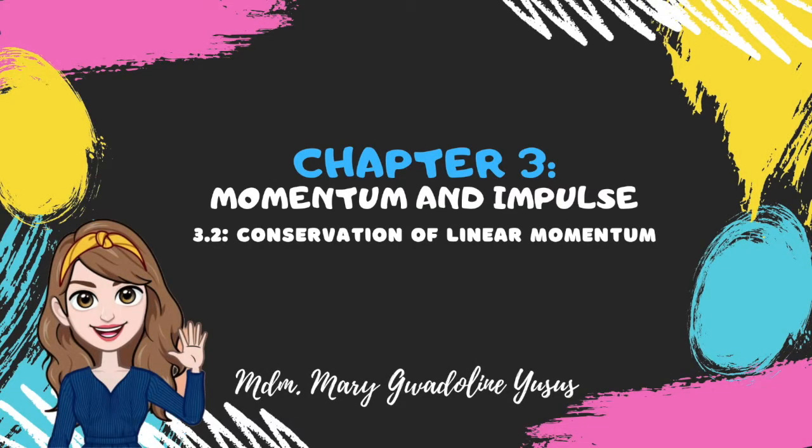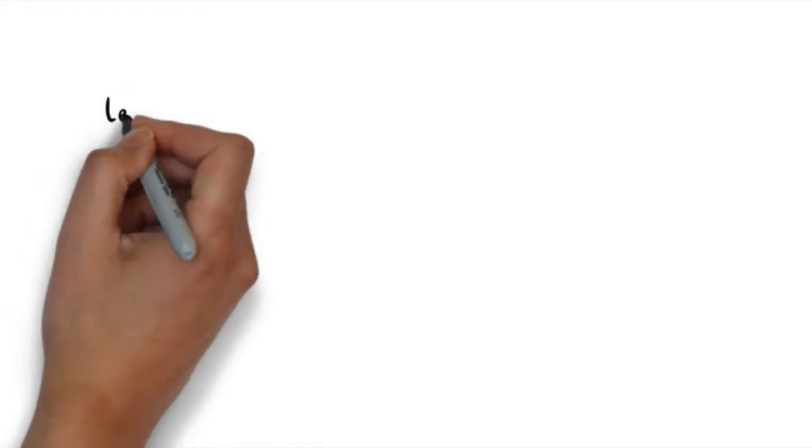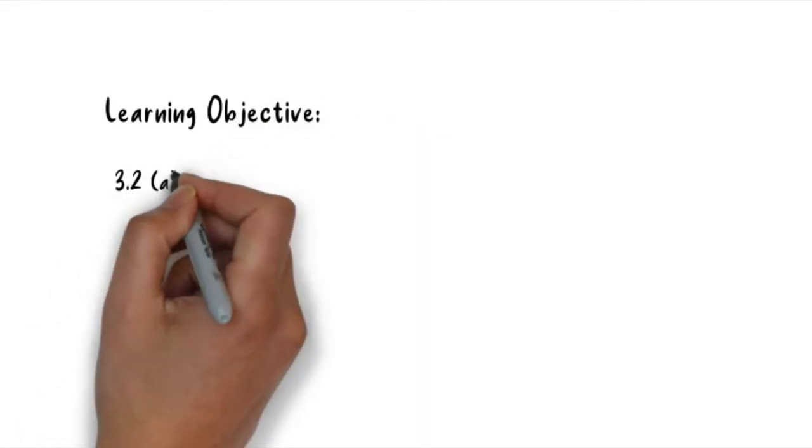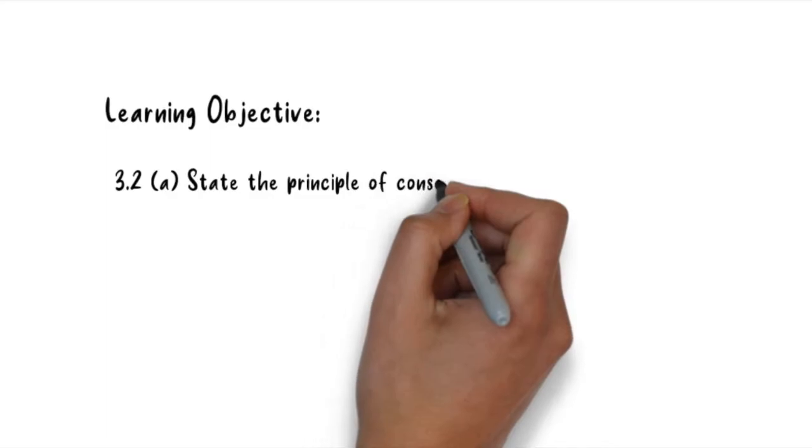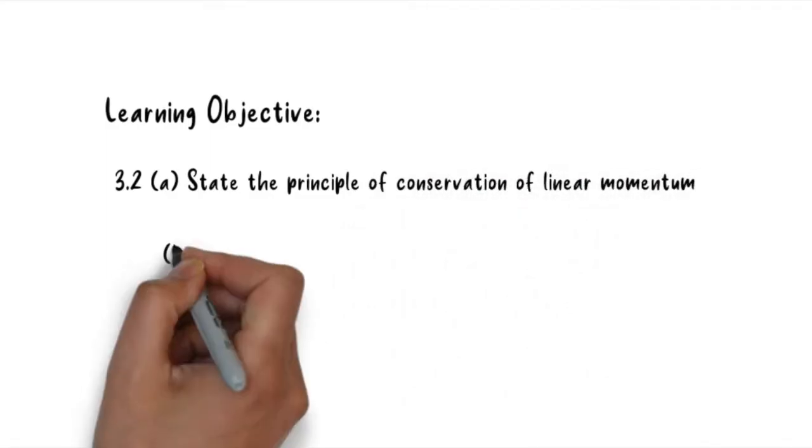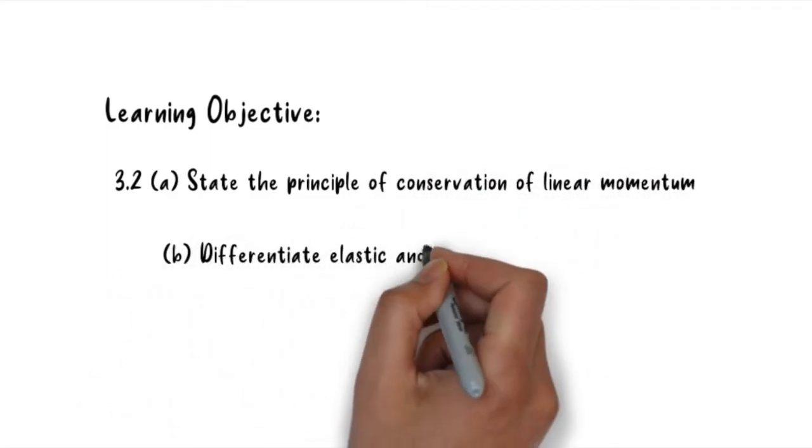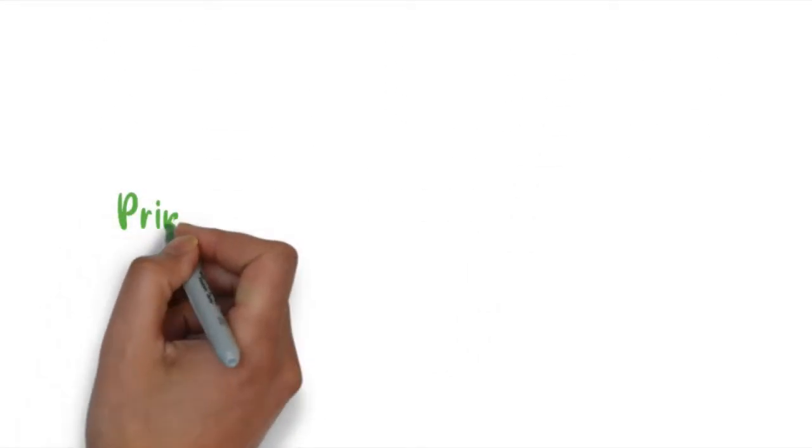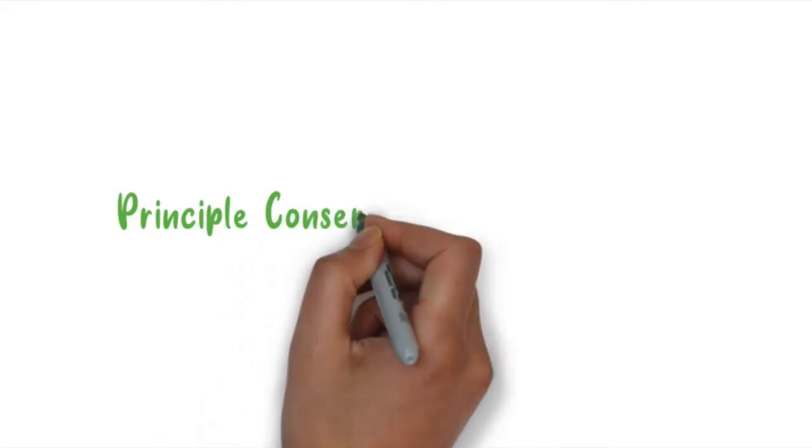Hello, in this video I'm going to continue on Chapter 3 where we're going to discuss conservation of linear momentum. Here are a few objectives that we need to achieve. The first one is to state the principle of conservation of linear momentum, and to differentiate elastic and inelastic collision.